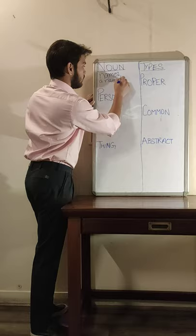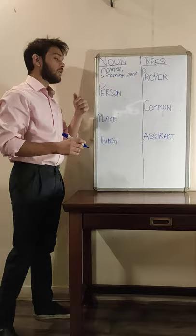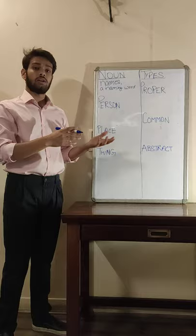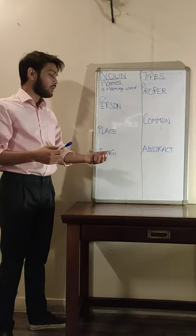What can we name? We can name a person, like all of us. All of us are persons. We can name places — our city, our school, our hospital. We can name things — board, table, marker. All of these are things.